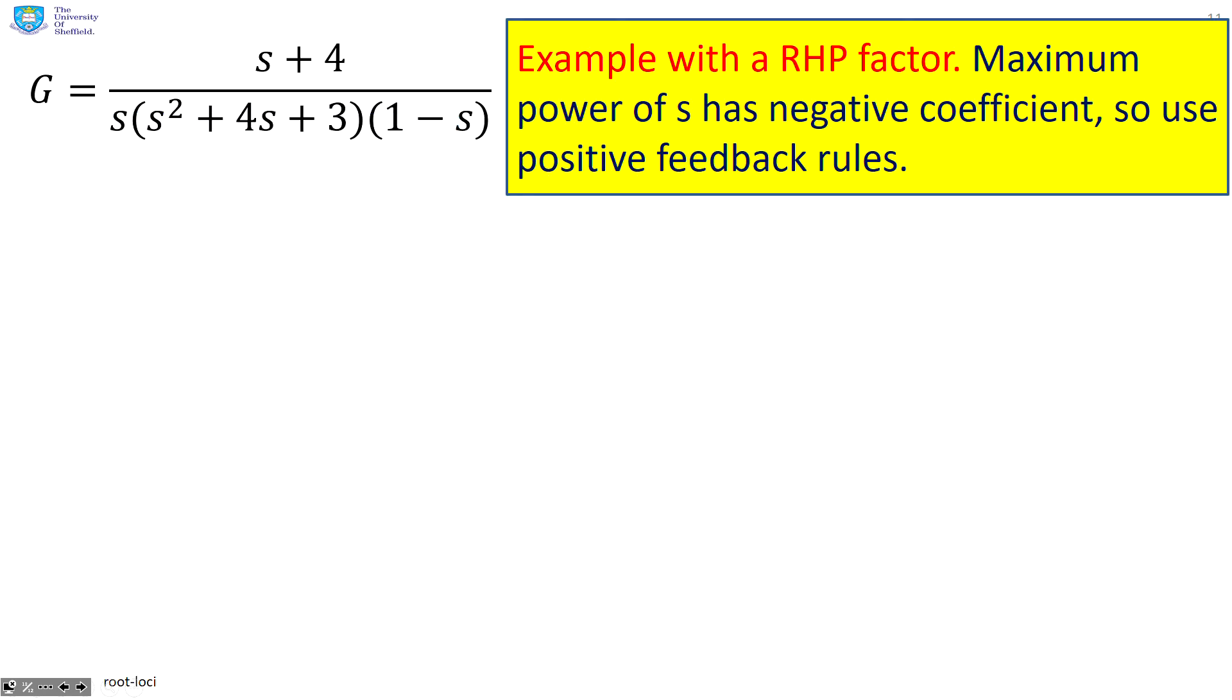Here's an example then. And you'll see this example's got a right half plane factor. But more importantly, you can see that factor is written as one minus s. So the maximum power of s in this denominator has got a negative coefficient. And so therefore, I'm going to need the positive feedback root loci rules to do the root loci.